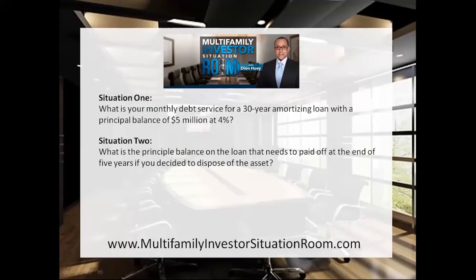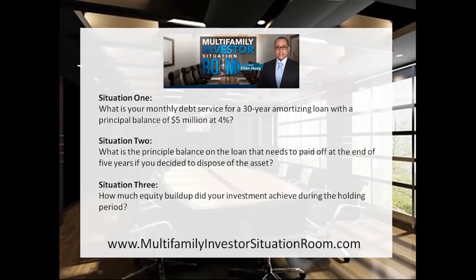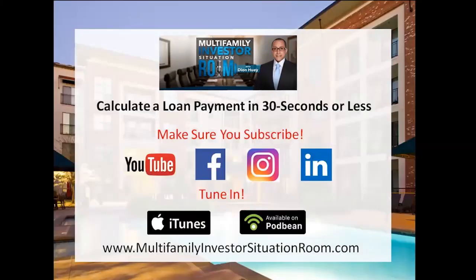Now looking at our last and final situation — situation three: how much equity buildup did your investment achieve during the holding period? For those of you that are pretty savvy, I'm sure you already have an answer to this one — it's quite simple. The $4,522,375 is basically the payoff amount for this loan at the end of five years. All we have to do is take our original starting principal balance of $5 million and subtract the $4.5 million, and that gives us our answer — roughly about $500,000. If we actually calculate that out, you should come up with $477,624 for the equity buildup.